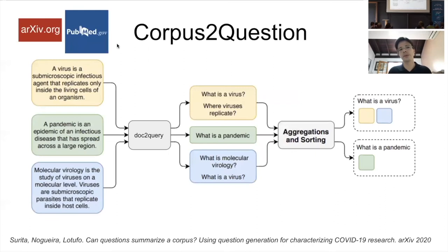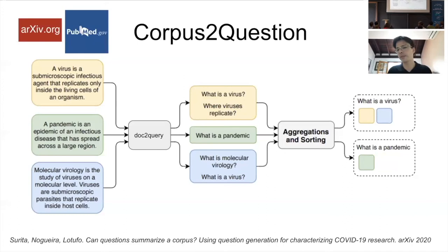Here's how it works: we start with a collection of documents from arXiv or PubMed, then feed each document into doc-to-query, which predicts questions the document might be relevant for — acting as a kind of summarizer that compresses a lot of the document's information into questions. We then aggregate those questions using paraphrase models to decide which questions are similar, clustering them. We convert the clustered questions into topics by removing question patterns with simple regex, extracting terms.